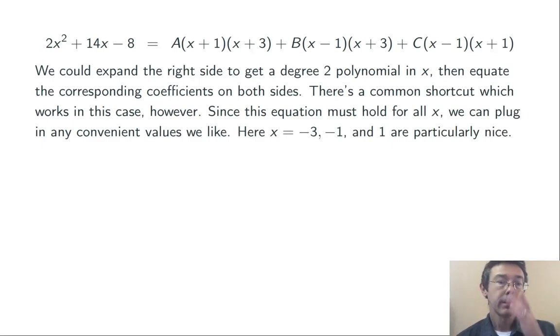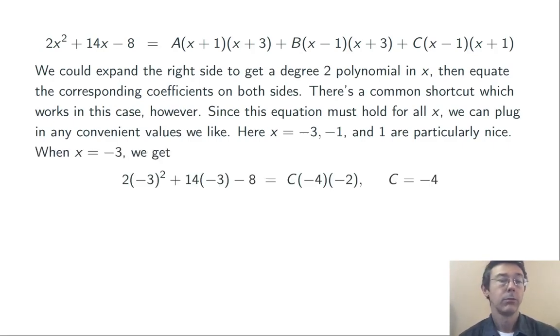So let's pick some nice values of x and plug them in. In particular, if I try x = -3, or x = -1, or x = 1, I'm going to get a lot of cancellation. For instance, when x is -3, plugging that in on the left and the right, I get the A and B terms on the right to cancel. Overall, I'm just left with the C term, and then I can solve for just that single variable very easily, just using a little arithmetic. I get C = -4.